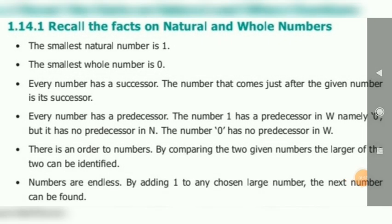Let us learn some recall facts on natural and whole number. First one: The smallest natural number is 1, because natural number starts from 1, 2, 3, etc. So, what is the first smallest number? 1. Second, smallest whole number is 0. Yes, whole number starts from 0, 1, 2, 3. So, smallest whole number is 0.